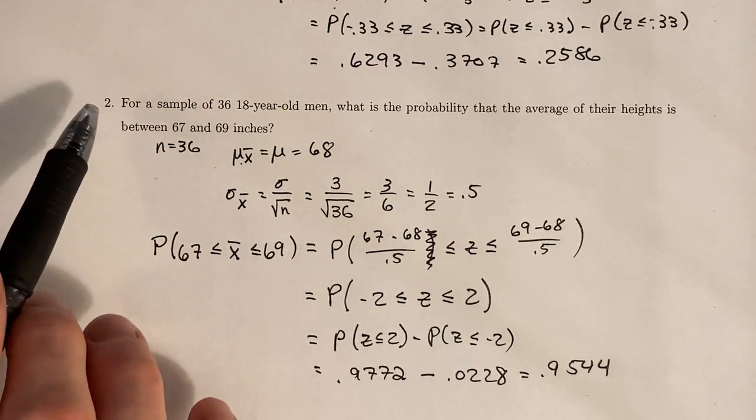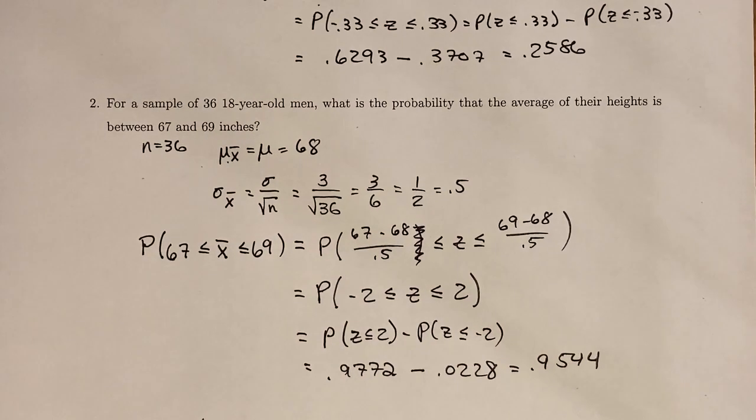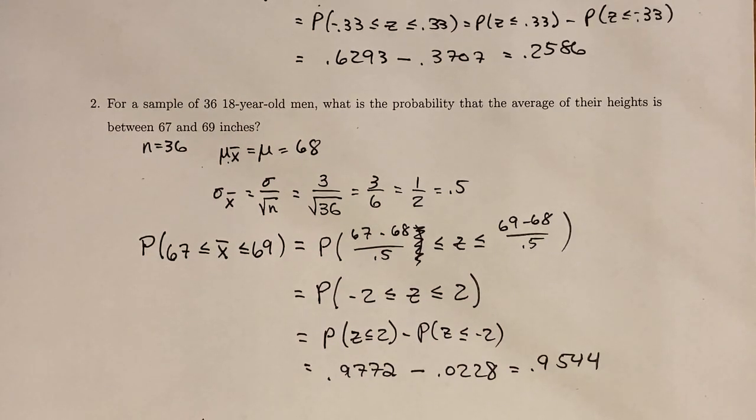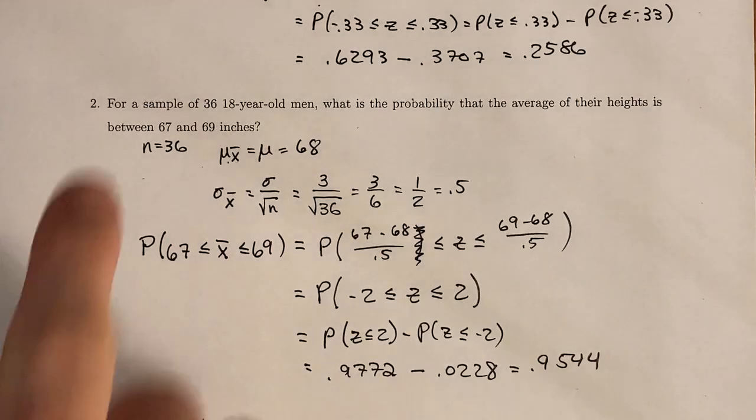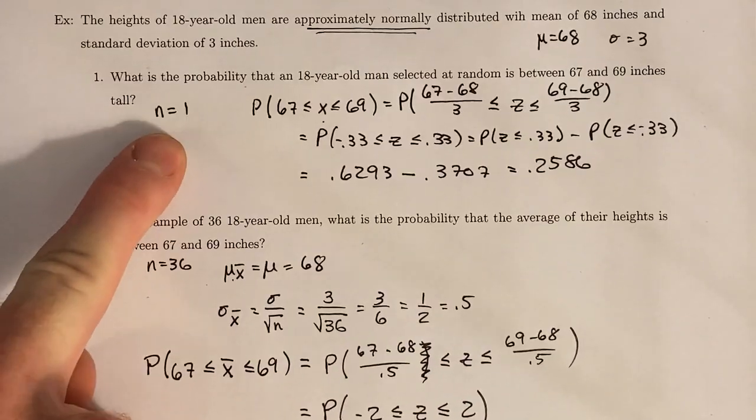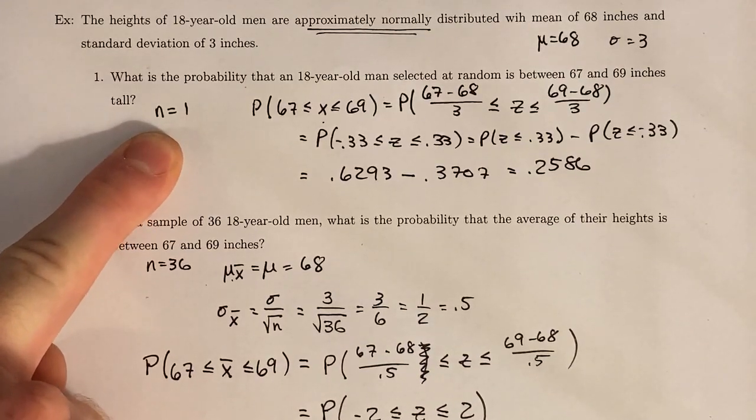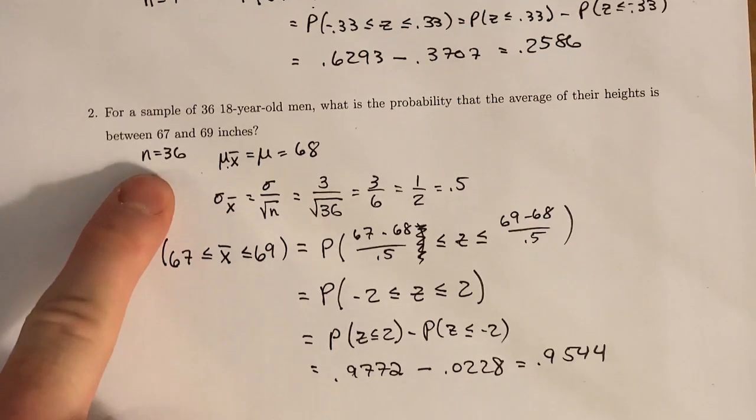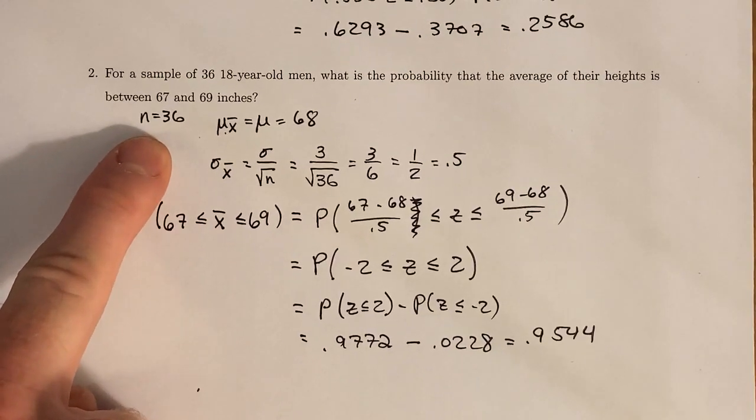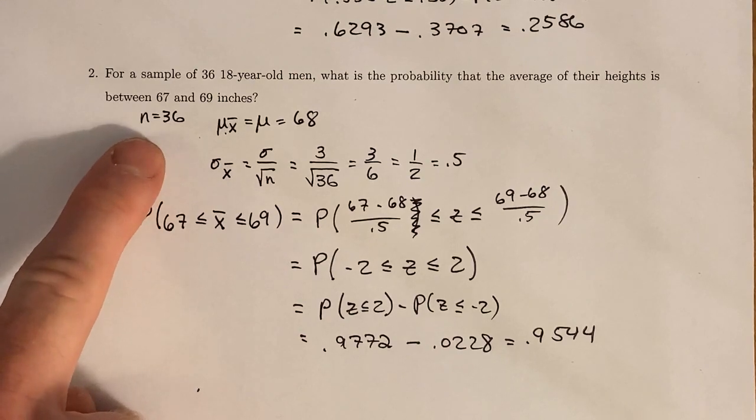Right. So taking the sampling mean, the sampling distribution of sample mean 36 gives you a better, well-rounded picture of what's actually going on in the world, as opposed to just one-off. Like this is a very special one person here. Whereas 36 kind of gives you a better sense of what's happening in the population.